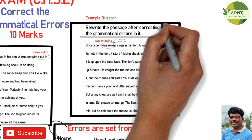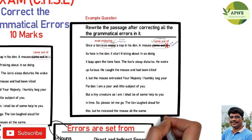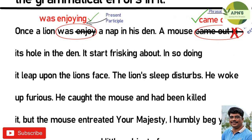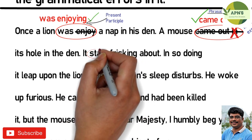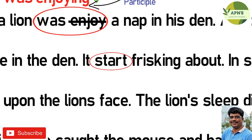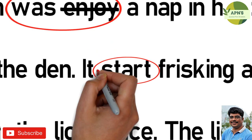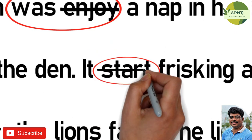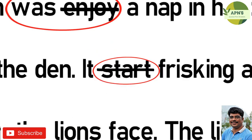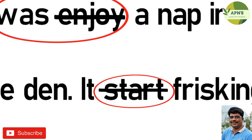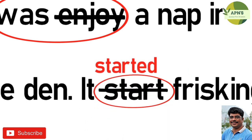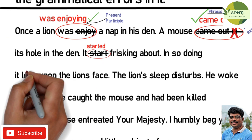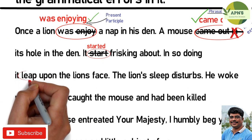The passage is written in the past tense but 'it start frisking' uses the present tense, suggesting the present moment. Therefore, 'start' should be changed to 'started' — the past tense form is more appropriate here.